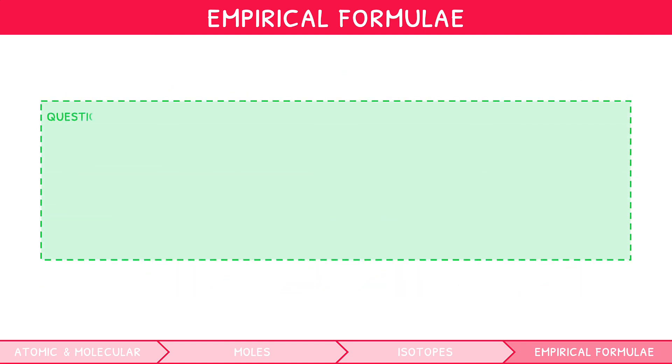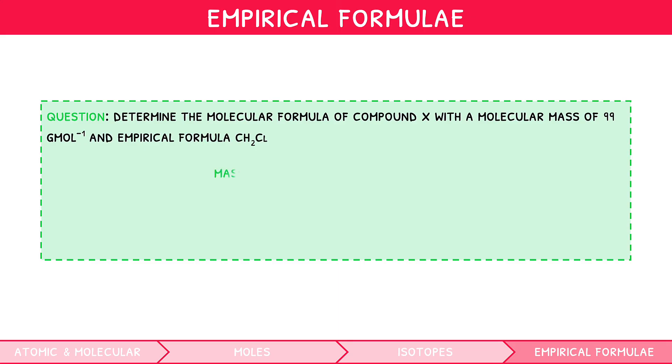Some questions extend beyond this and ask you to find the molecular formula based off of your calculated empirical formula. To do this, first find the empirical mass by adding up the atomic masses of all of the elements in your empirical formula, which equals 49.5. Then compare this to the provided molecular mass in the question, which in this question was 99. We can see that the empirical mass is half of the molecular mass, and therefore the molecular formula must be twice our empirical formula, i.e. C2H4Cl2.